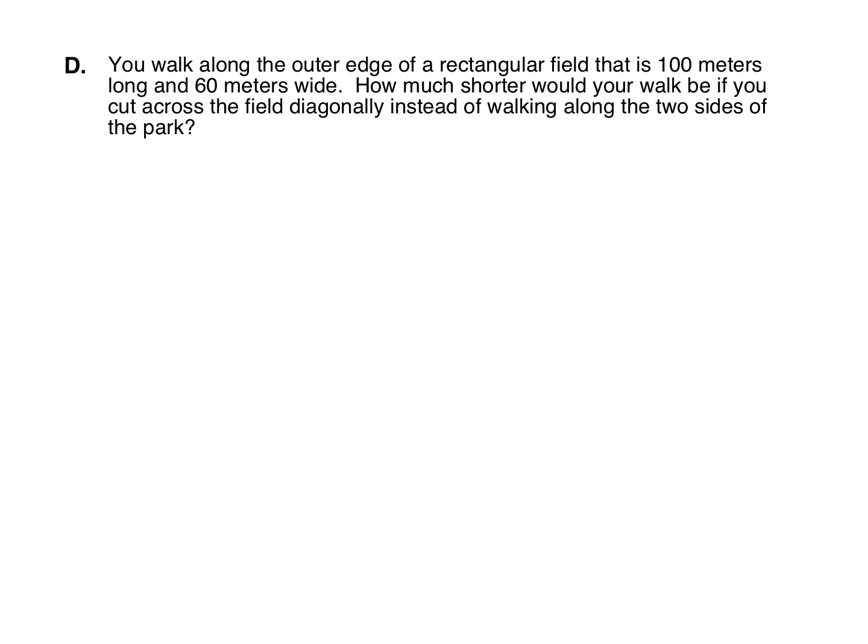Here is one final example. This time you're walking along the outer edge of a rectangular field that is 100 meters long and 60 meters wide. How much shorter would your walk be if you cut across the field diagonally instead of walking along the two sides?